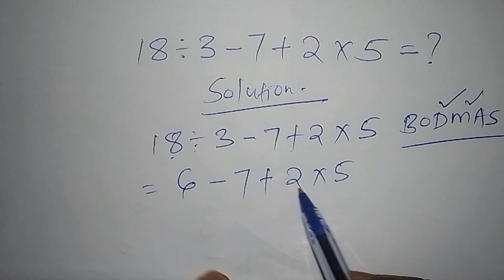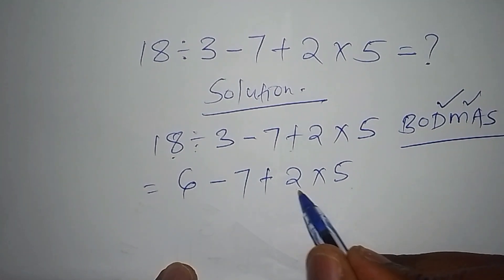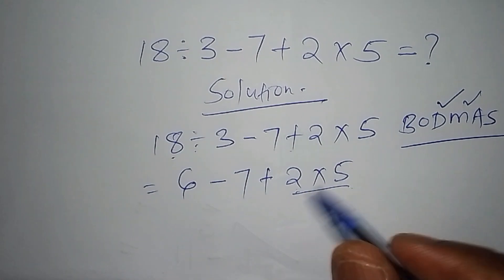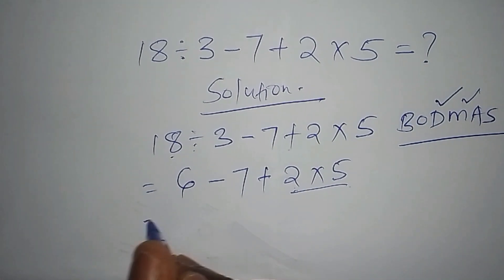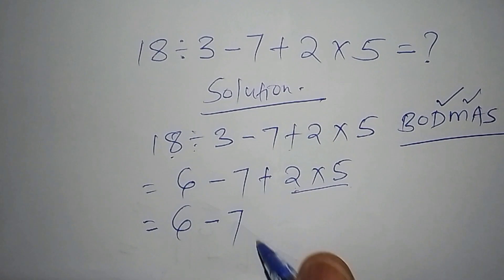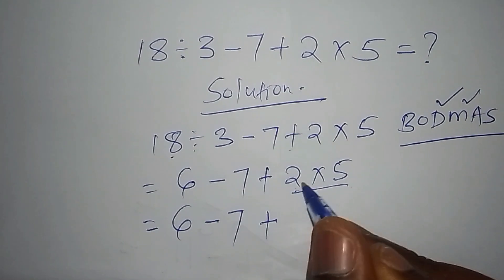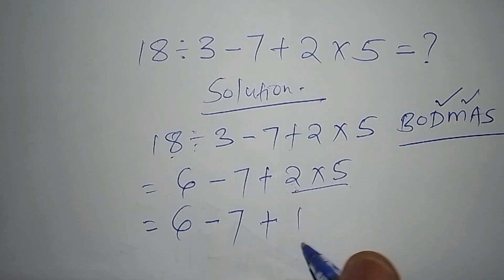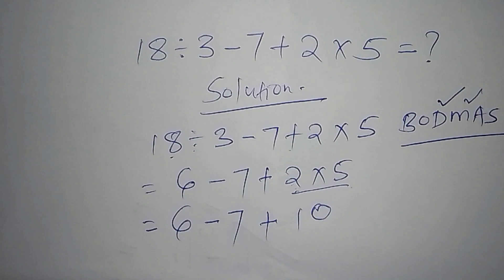So we shall have 6 minus 7 plus, that is now 2 multiplied by 5 is 10. So the next step now is for us to arrange this math problem in the best way possible.